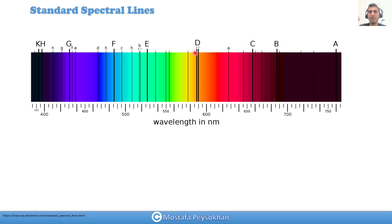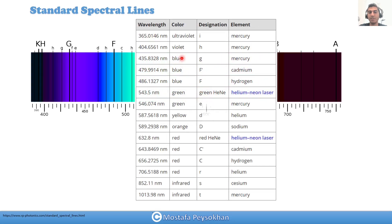These three standard lines are used for measuring the Abbe number of each material. In this table you can see, for example, for mercury ultraviolet is 365nm, mercury H line is 404nm, mercury G line is 335nm, hydrogen F line is 486nm, and helium D line is 587nm.